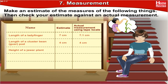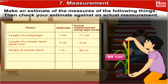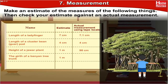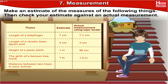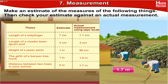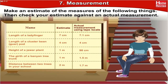Height of a jowar plant — Selene measured it to be 1 meter, but the actual measurement was 90 centimeters — quite close! The girth of a banyan tree trunk — Anil's estimate was 1 meter, but the actual measurement was 1.5 meters. Distance between the two trees in the school — Raju estimated 2 meters, and the actual measurement was 1.7 meters. Great job, Raju — quite close!